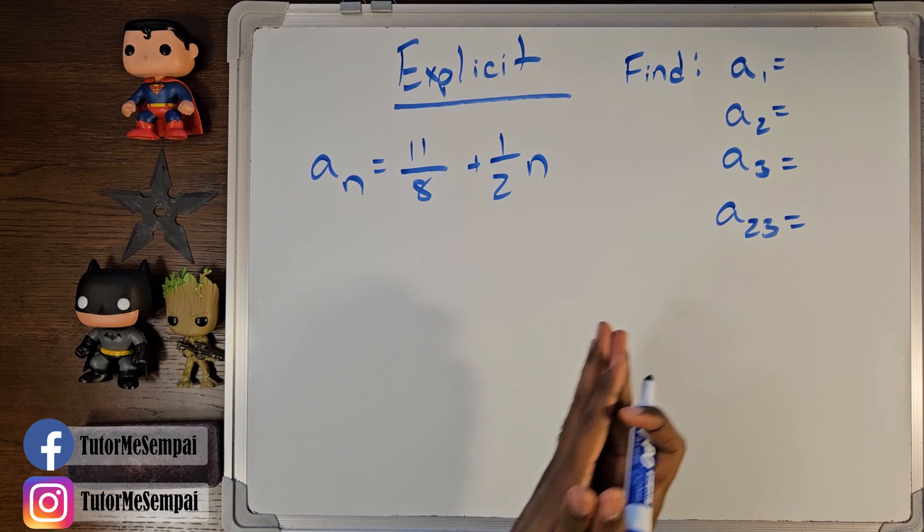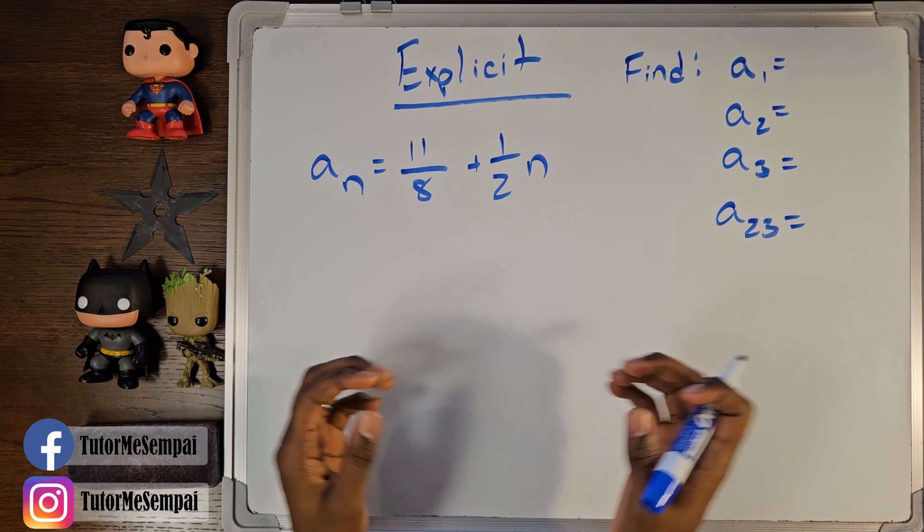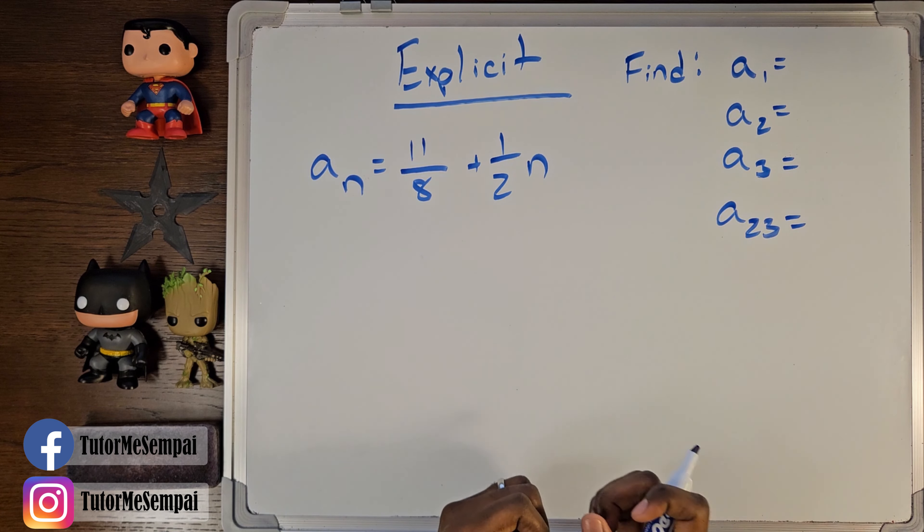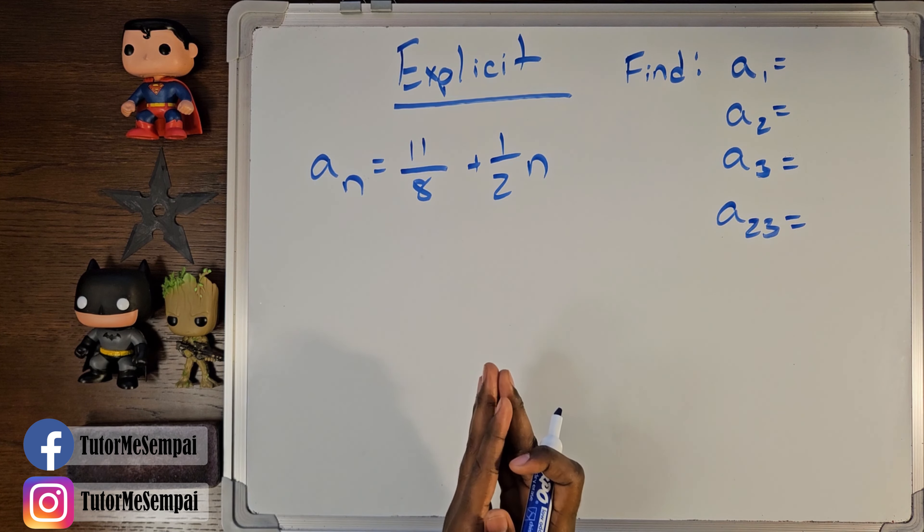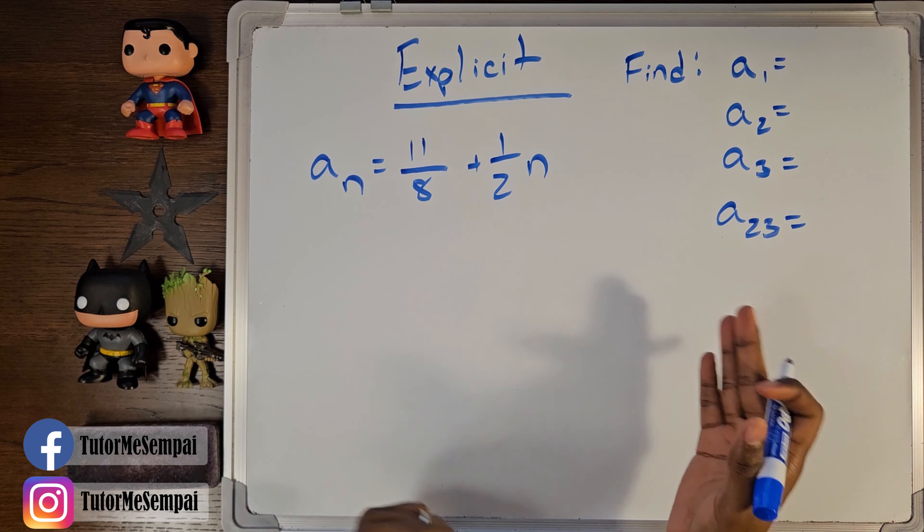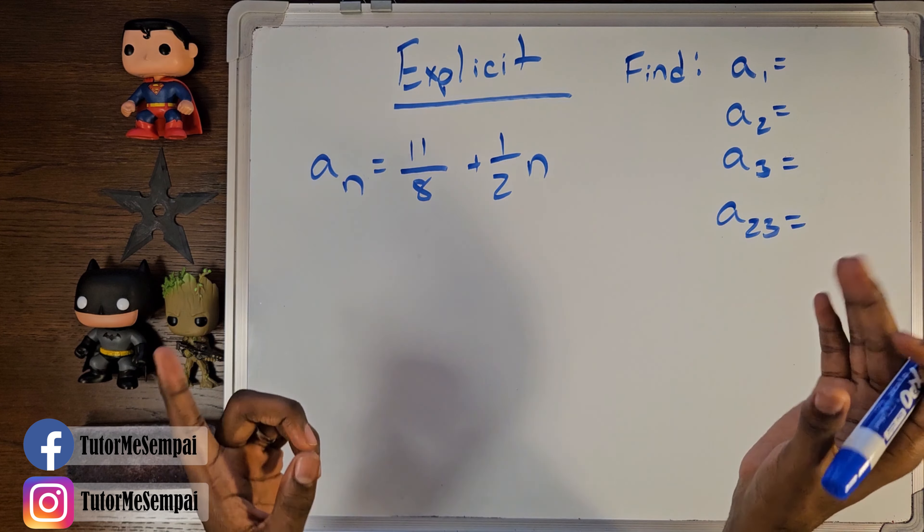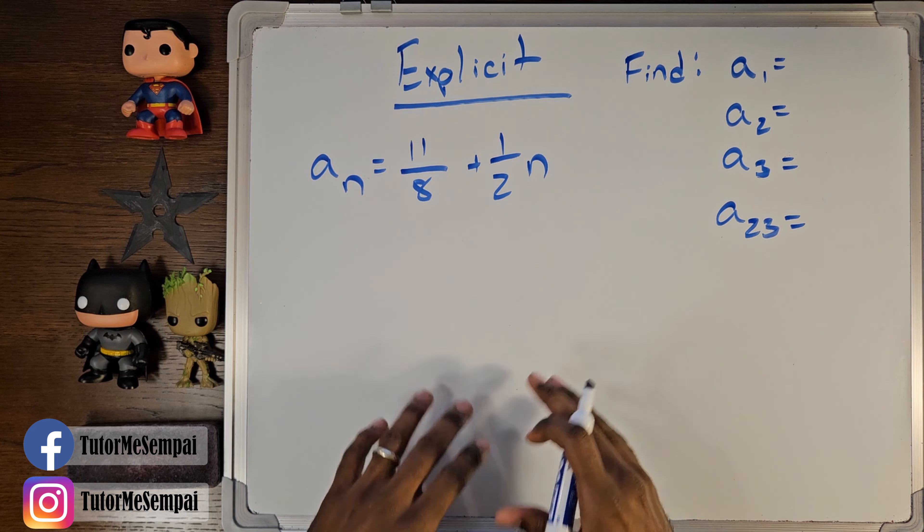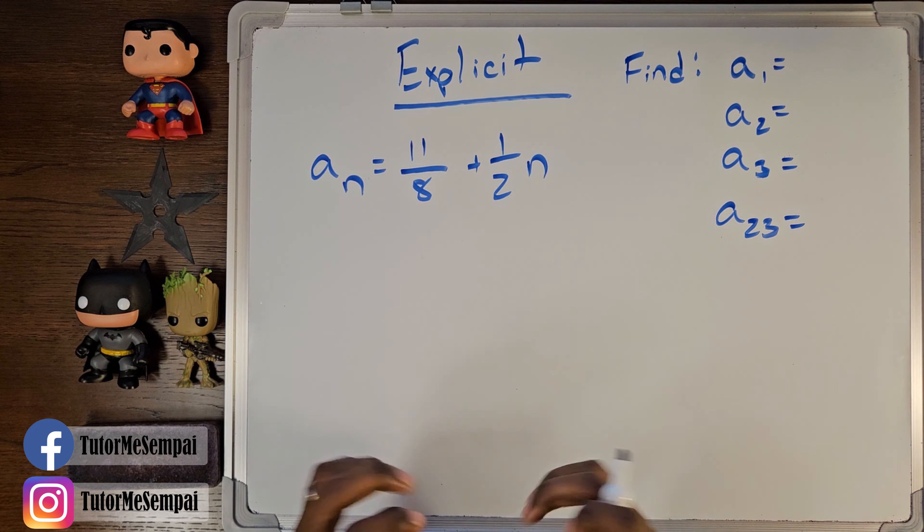In my previous video, we covered the basics of arithmetic sequences. More specifically, we covered how to find your explicit formula and your recursive formula when you're given an arithmetic sequence. If you hadn't seen our previous video, you could find it right up here. However, in this video, we're going to be using both of those formulas to find some terms in our sequence.